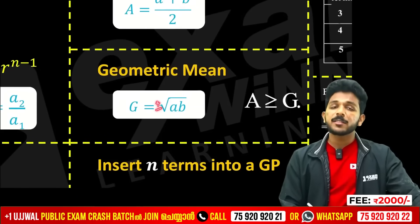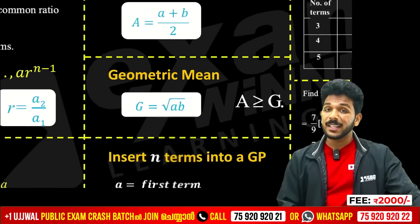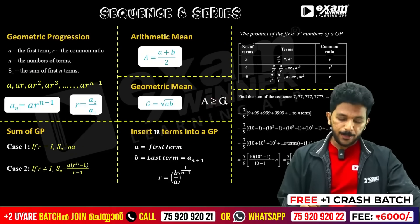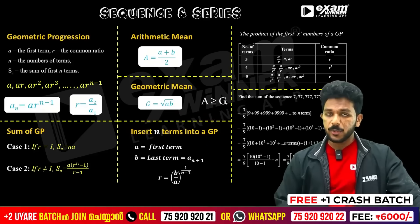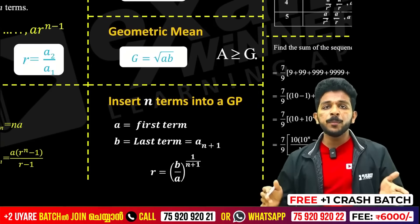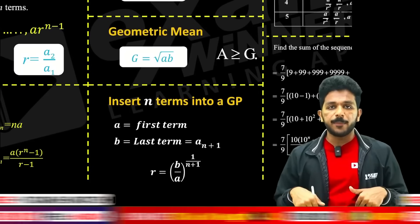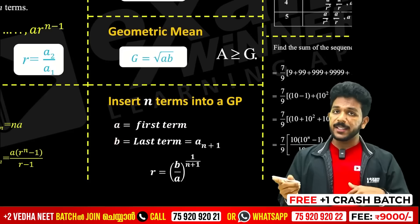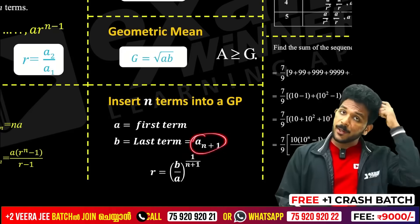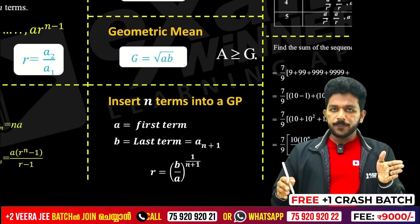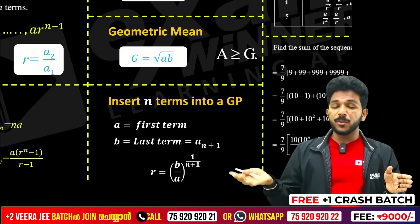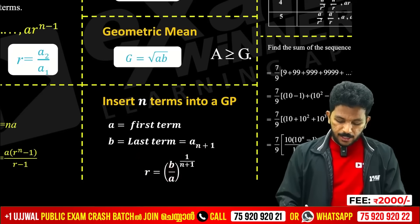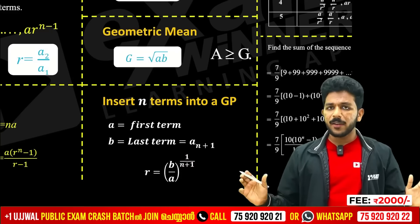Geometric mean will be plus or minus — the root will have two answers. Arithmetic mean will be greater than or equal to geometric mean. Insert n numbers into a GP: for example, 2 numbers 1 and 256 with 5 numbers added in between — that is a GP. The last term formula: last term divided by first term, raised to 1 by (n plus 1).